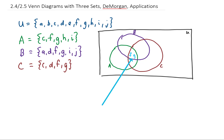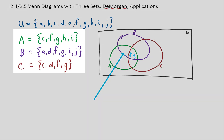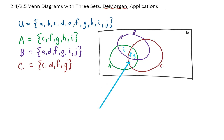Now let's work our way out. This region right in here represents elements that are in both A and B but aren't in C. It looks like element I fits that criteria, so I'm going to put I right in here. The region down here is elements in both A and C but not in B — that's element C. Over here we have elements in both B and C but not in A, and that looks like D.